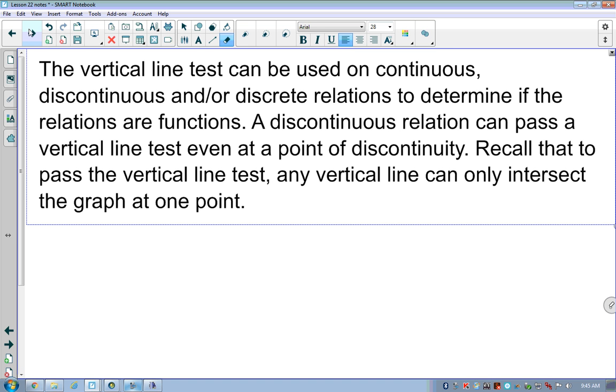The vertical line test that's been mentioned can still be used in a continuous or discontinuous or even a discrete relation to determine if that relation is a function. A discontinuous relation can pass a vertical line test even at a point of discontinuity. But recall that to pass the vertical line test, any vertical line can only intersect the graph at one point. So if I find even just a point where it does not pass the vertical line test, it is a relation and not a function.